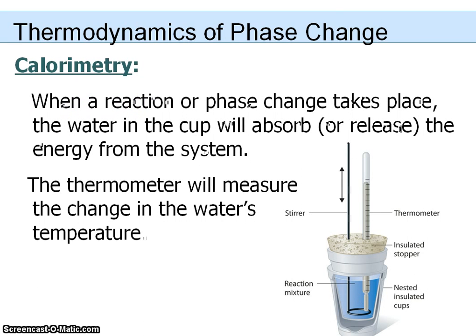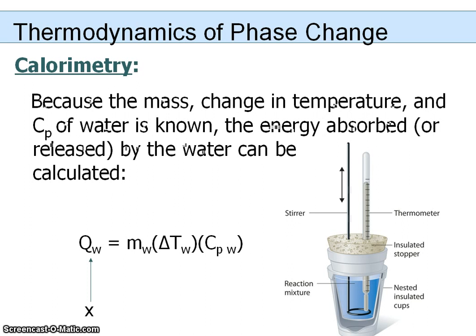The way a calorimeter works is when a reaction or a phase change takes place, the water in the cup is going to absorb the energy from the system. If it's an endothermic system, the water is going to release energy. Either way, the thermometer will measure the change in the water's temperature. Because the mass of the water, the change in temperature, and the CP (specific heat) of water are known, we can use this formula to calculate the amount of energy absorbed or released.